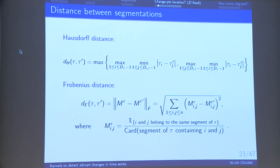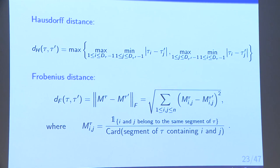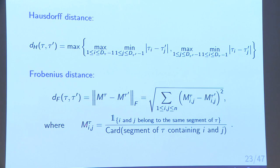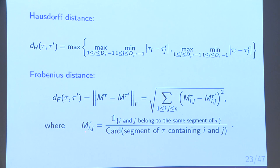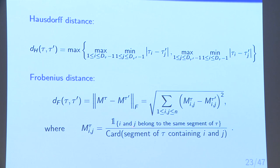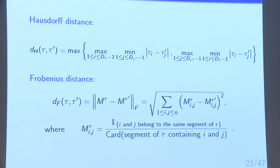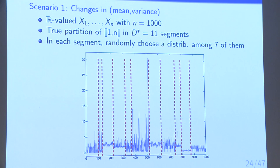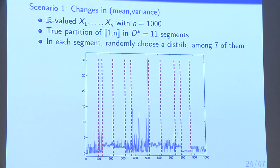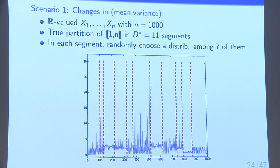The first distance is the Hausdorff distance, which is quite classical. The second is the Frobenius distance, defined as the Frobenius norm between matrices. The matrix M_τ is defined so that coefficient (i,j) equals 1 if i,j belong to the same segment of segmentation τ, divided by the cardinality of that segment. With these distances between segmentations, we consider several scenarios to assess empirically the quality of this first step when we vary the kernel we use.